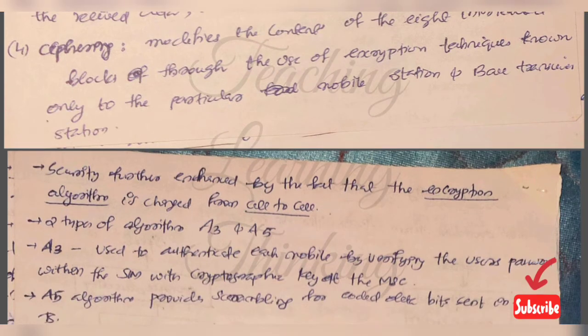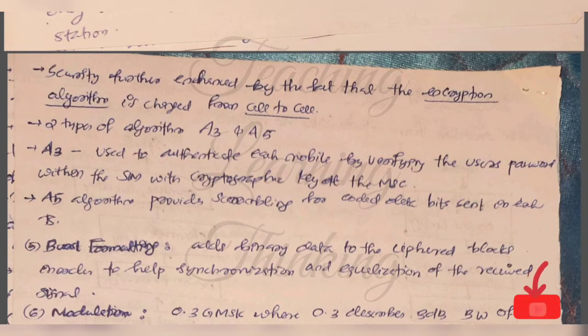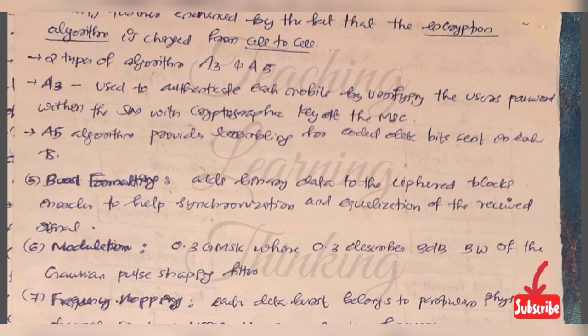Security is enhanced by the fact that encryption is changed. Two types of algorithms are A3 and A5. A3 is used to authenticate each mobile by verifying the user password within the SIM with cryptographic key at the MSC. A5 algorithm provides scrambling for data which is sent by each base station. The next one is burst format. Add binary data to the cipher blocks to help synchronization and equalization of the received signal.